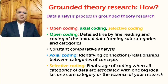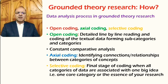The second stage is axial coding, which involves the identification of connections and relationships between categories or concepts. The categories identified at the open coding stage are now interconnected, and researchers reflect on the interconnectivity of those categories. The final process in data analysis is selective coding, where at the final stage of coding, all categories of data are associated with one big idea — that is one core category, or the essence of the research.